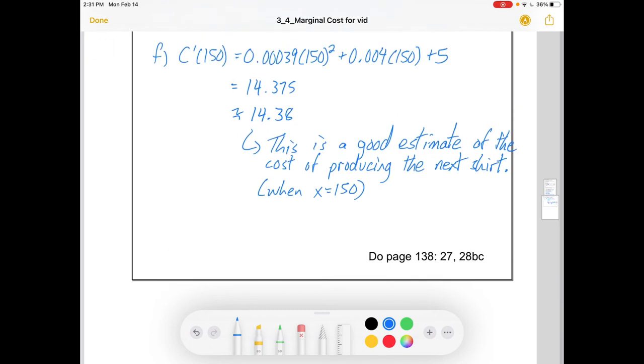In the Finney 4th edition AP Calculus book, you could take a look at page 138, number 27, and 28 BC. I think in number 27, the first part kind of combines A and B together. It looks for average cost to begin with.